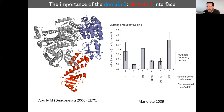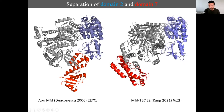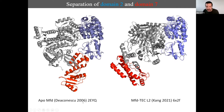Mutation frequency decline is not necessarily a straightforward map onto transcription-coupled repair — there are some extra complexities — but fortunately for these purposes it worked. We're interested in when these two domains separate, and from Seth's structures we can see about an 80-angstrom separation of residues that are immediately adjacent in the apo structure solved by Alex back in 2006.